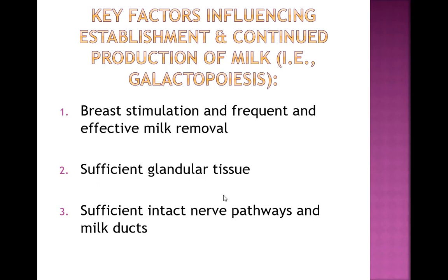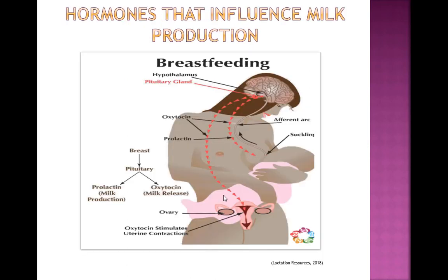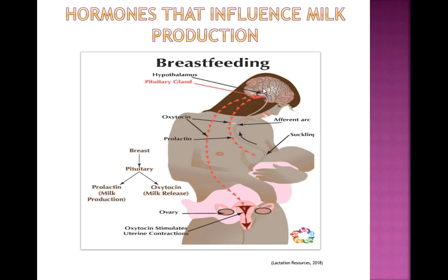When the breast is stimulated, what happens? When the baby sucks at the breast, a message travels through nerve pathways up to the brain — to the hypothalamus where the pituitary gland is located. The brain receives the signal that a hungry baby is here, and the pituitary gland releases two hormones: oxytocin and prolactin. Oxytocin is responsible for the milk ejection reflex, releasing milk from the alveoli to the baby, while prolactin tells the body to produce more milk.